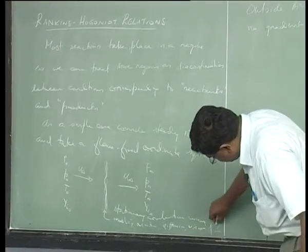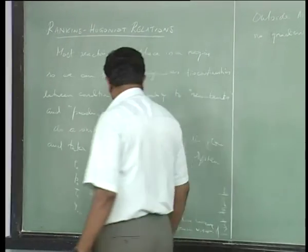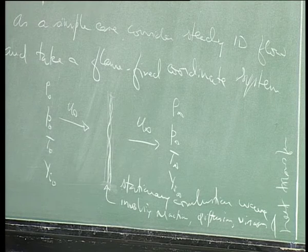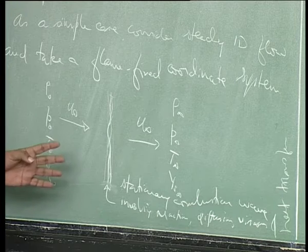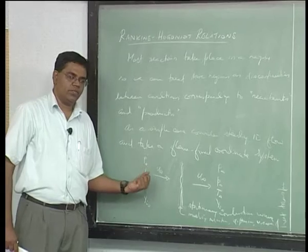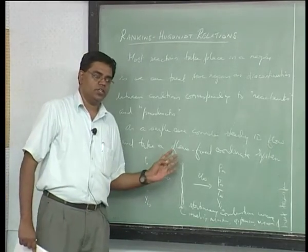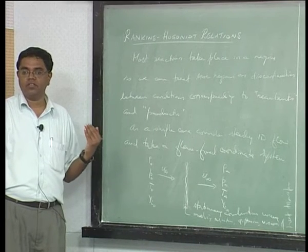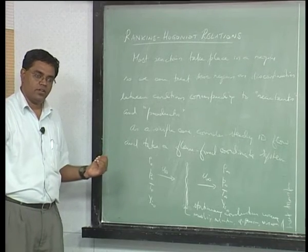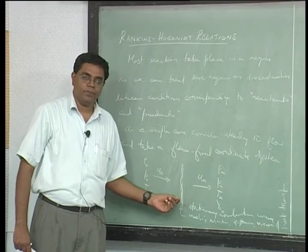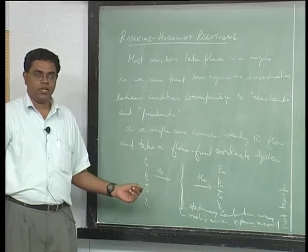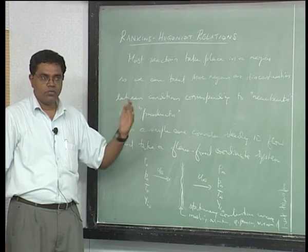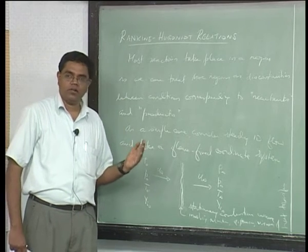Gas dynamic shocks are only about a few mean free paths thick — less than 10 — which is extremely thin. Here, the reaction zone is not going to be that thin. For a flame in a Bunsen burner, you expect it to be less than a millimeter or around that — which is still quite small and thin.